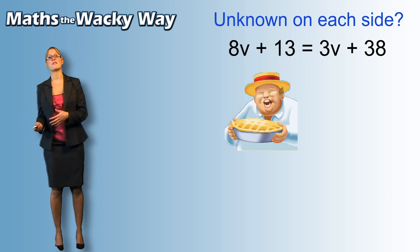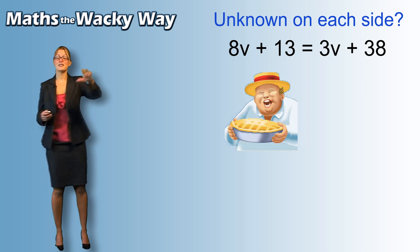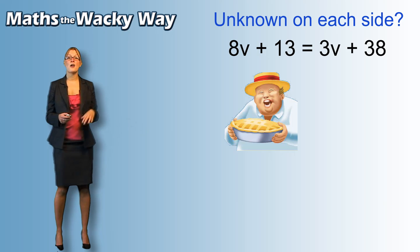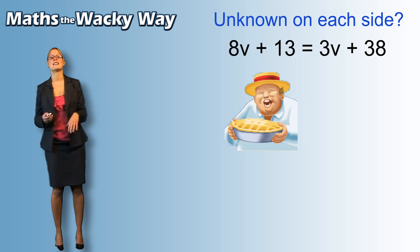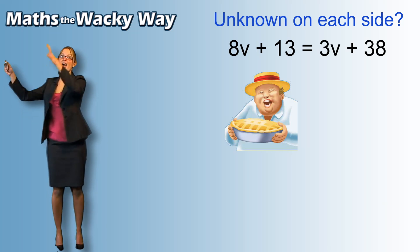So, we on this side have 8v, so this v has eaten 8 pies and on the other side we've got 3v, well that v has eaten 3 pies. So, of course, the character that has eaten 8 pies has eaten the most and we are going to deem them to be the heaviest.